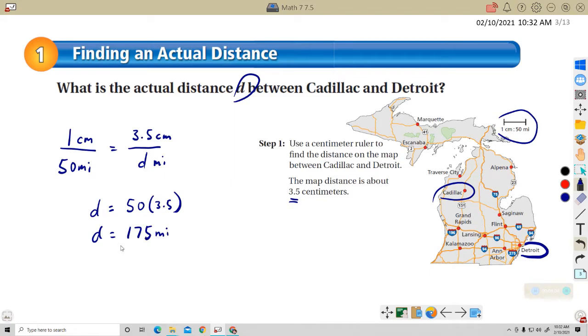So the actual distance between Cadillac and Detroit is 175 miles as the crow flies.